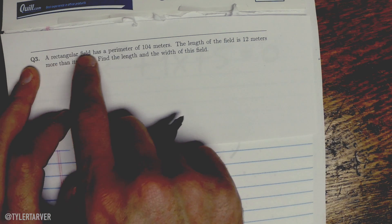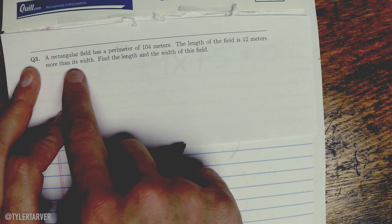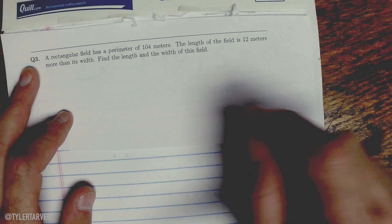Okay, it says a rectangular field has a perimeter of 104 meters. The length of the field is 12 meters more than its width. Find the length and width of the field.